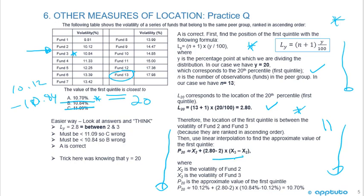Here's the formula. It's going to be 10.12% + (2.8 - 2) × (10.84% - 10.12%) = 10.7%. But as I said, sometimes you have to look. This is the full math.